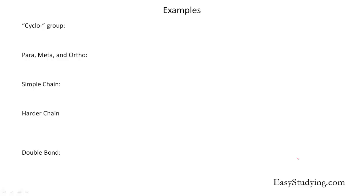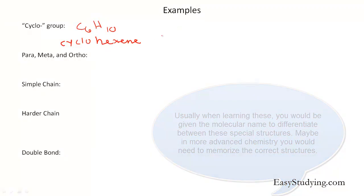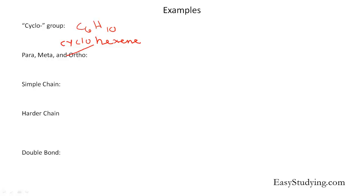Now I'll start with some examples to help clarify what I said before. For the cyclo group, I'm going to use the example C6H10 — 6 carbons and 10 hydrogens. Since this is a cyclo group, you would usually be given the name cyclohexene. The cyclo tells us it is circular, and hexene corresponds to the formula — we have 6 carbons, so we draw those in a circular form.